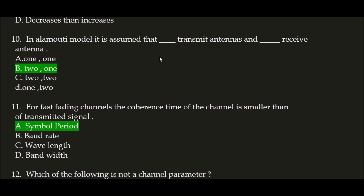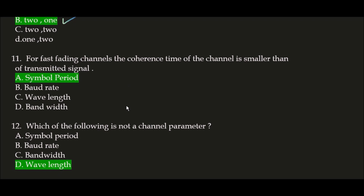Next question: in the Alamouti model, it's assumed that blank space transmit antennas and blank space receive antenna. The correct answer is option B: 2 and 1 respectively. In the Alamouti model, it's assumed that 2 transmit antennas and 1 receive antenna. Next question: for fast fading channels, the coherence time of the channel is smaller than that of the transmitted signal, and this is called the symbol period.